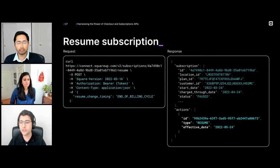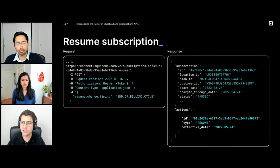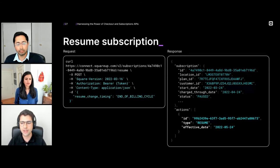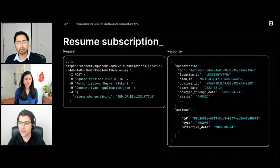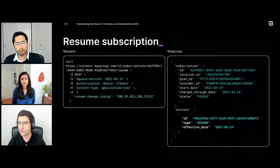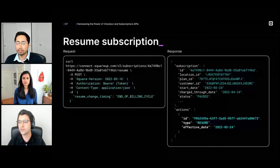When your customers are back from vacation and ready to resume, you call the resume endpoint using the subscription ID in the URL. In this case, we're calling the resume endpoint with the resume change timing at the end of the billing cycle, so it will schedule a resume at the end of the current billing cycle. The subscription was paused on April 24th — it's a monthly subscription — so the resume action is scheduled for May 24th, one month after it was paused. Once the resume action takes place, the status will change back to active and it will resume billing.